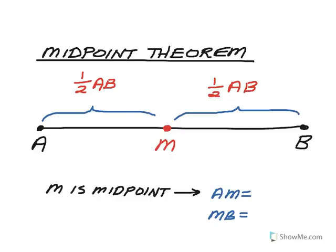And a lot of times we'll write our if-then statements. This will be like the if right here, if M is the midpoint, and then the arrow will mean then. Then AM is half the total, and MB is half the total.